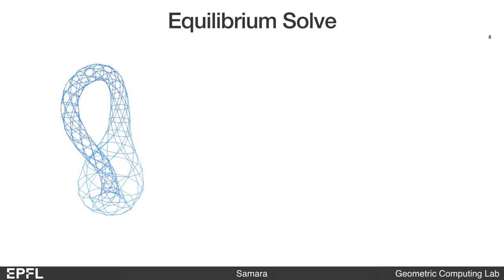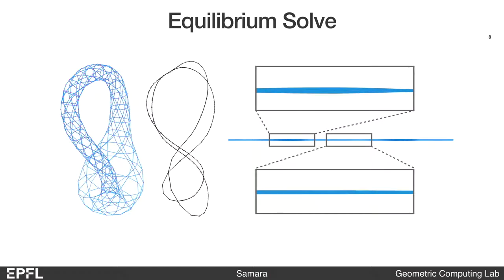We take an embedded graph as the input weaving pattern. Our algorithm will automatically pair up edges to form our ribbons. We initialize all ribbons to be straight. In our framework, we can specify the ribbons to have spatially varying stiffness by changing their cross-sections.